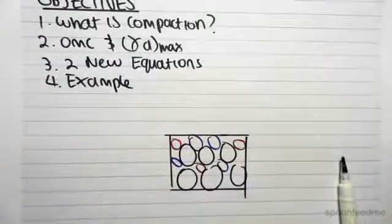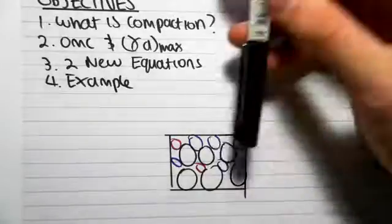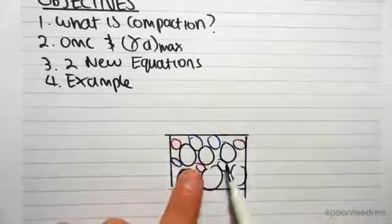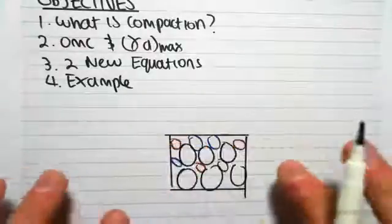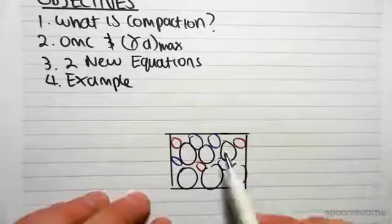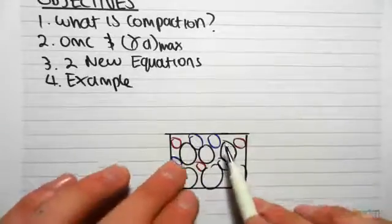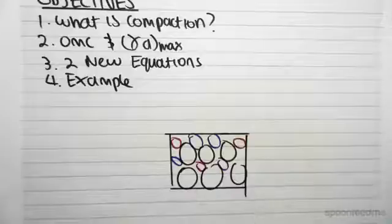When we come and put a structure in this, if we don't compact it first, what's going to happen is that the structure is going to come and sit on this, and the air and the water are going to be squeezed out, and the building is going to settle. And it's not a good thing because, say for example, this side settles more than this side, we're going to get differential settlement, and the building is going to tilt like the Leaning Tower of Pisa.